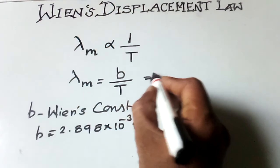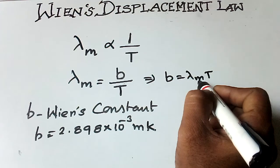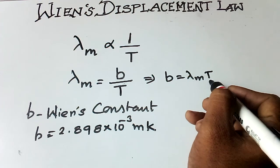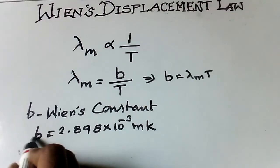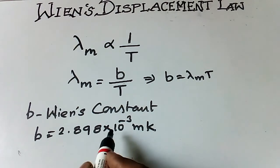Because this equation may be written as b equal to lambda m into T, lambda m that is maximum wavelength in terms of meter, and T in terms of kelvin. So we can get the unit of Wien's constant is meter kelvin. The value is 2.898 into 10 to the power minus 3.